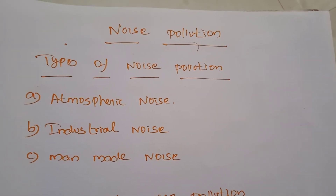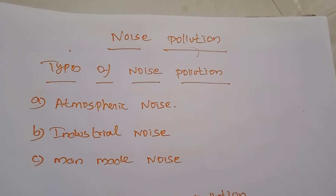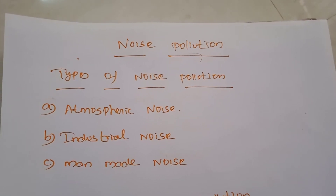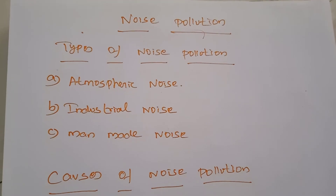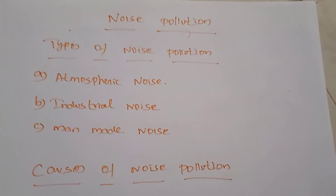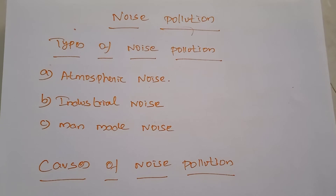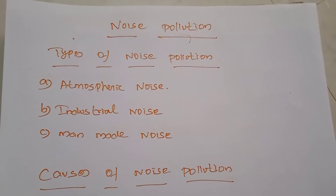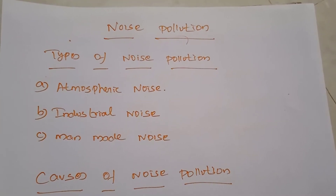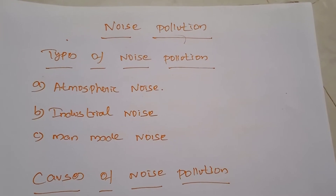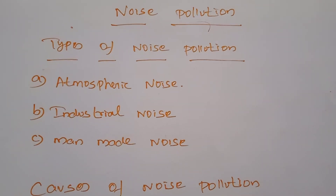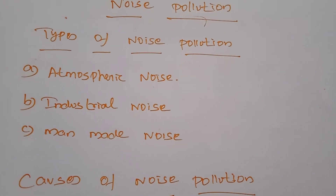Next, noise pollution. Noise pollution is unwanted or excessive sound that can have a deleterious effect on human health and environmental quality. It is commonly generated by highway, railway, and airplane traffic, and from outdoor construction activities. Noise pollution is classified into three types: atmospheric noise, industrial noise, and man-made noise.